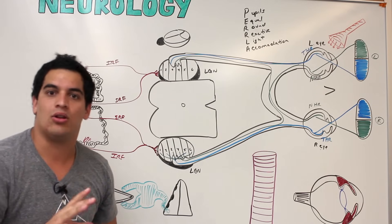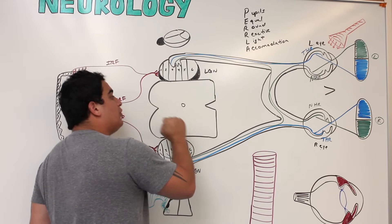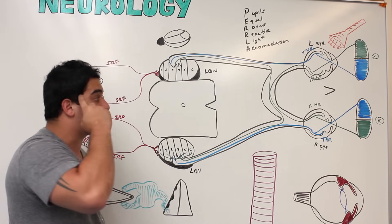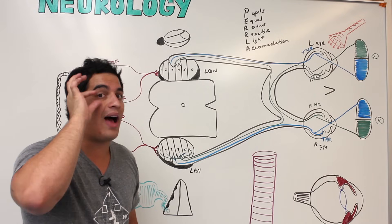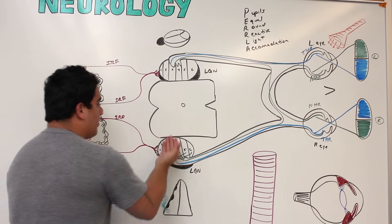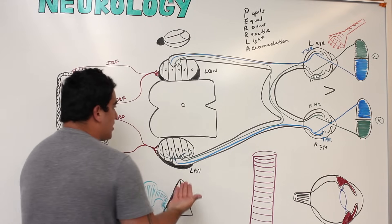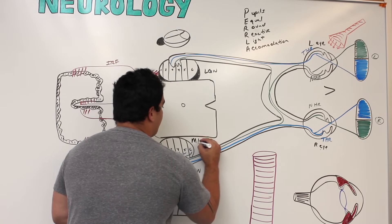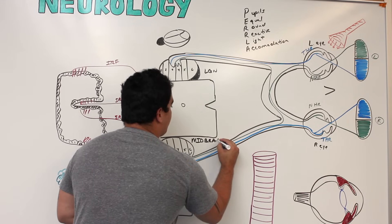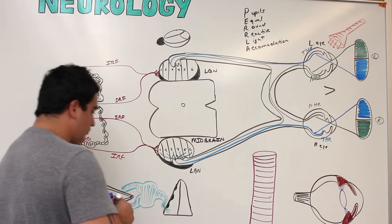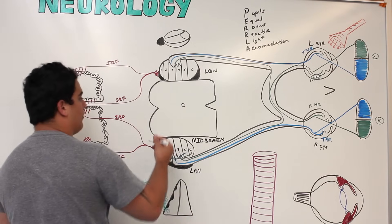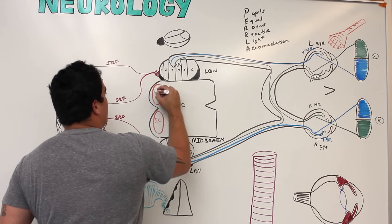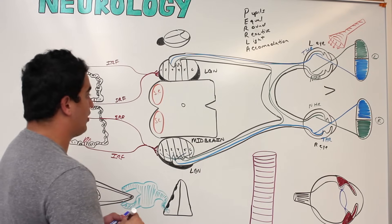However, for the pupillary light reflex, we're not looking at conscious vision — this occurs at the brainstem level. Some fibers from the lateral geniculate nucleus feed into the midbrain, specifically at the level of the superior colliculus.